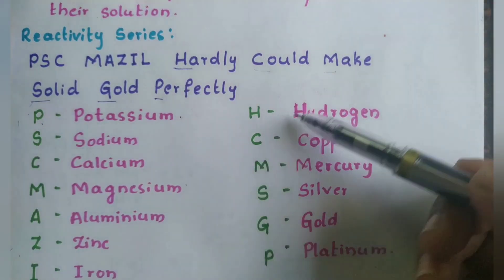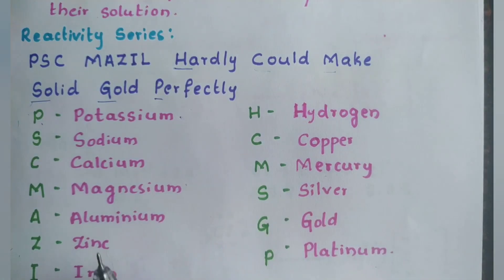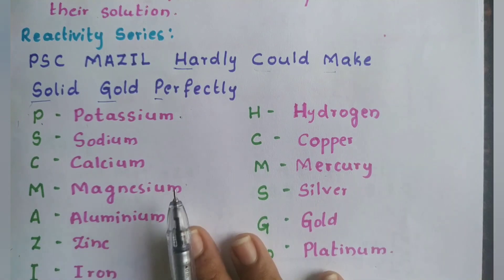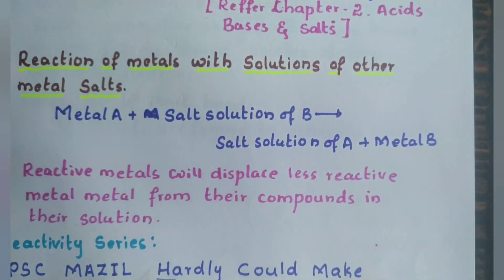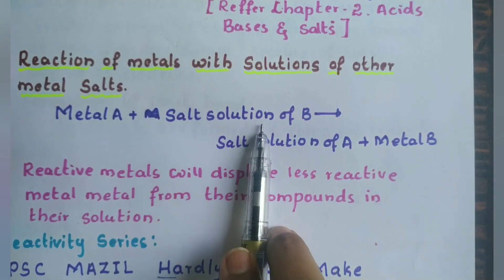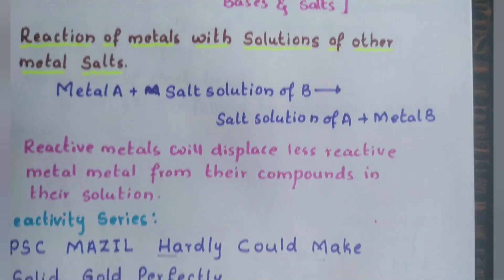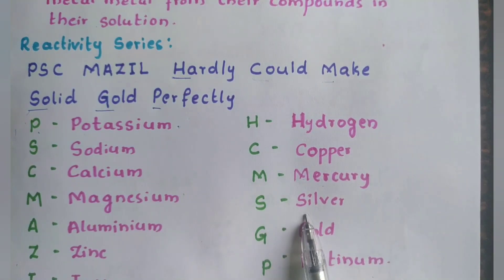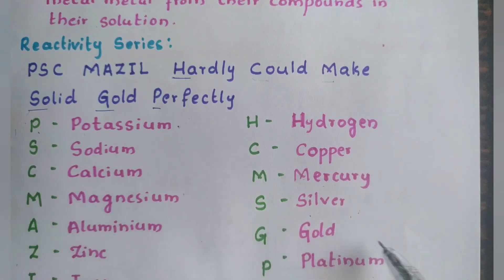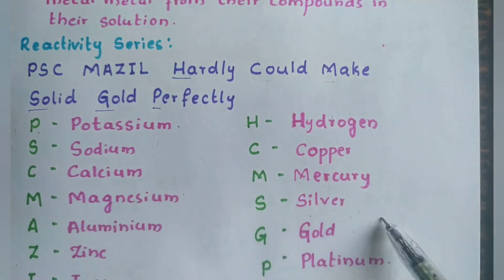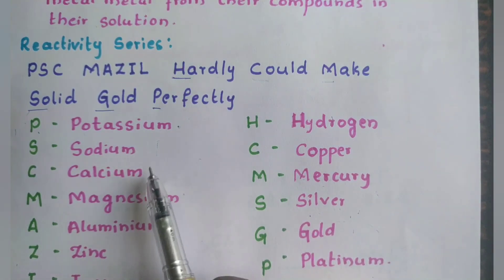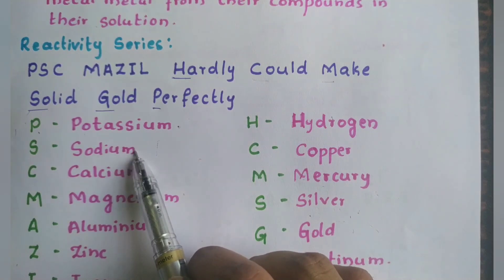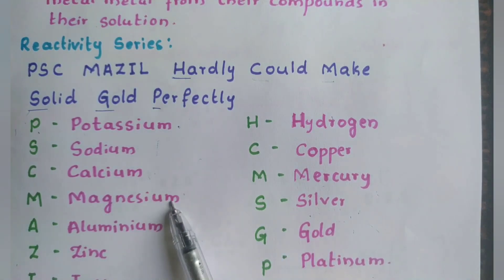The metals in the middle are moderately reactive. If you learn the reactivity series, you will be able to decide which metal is more highly reactive and which displaces which. A highly reactive metal always displaces the least reactive metal. For example, potassium will not be displaced by platinum, gold, or silver. But silver in a silver salt can be displaced by any metal above it in the series. Calcium cannot displace sodium because sodium is more reactive than calcium, but calcium can displace magnesium because magnesium is comparatively less reactive than calcium.